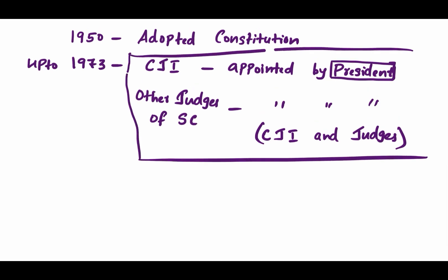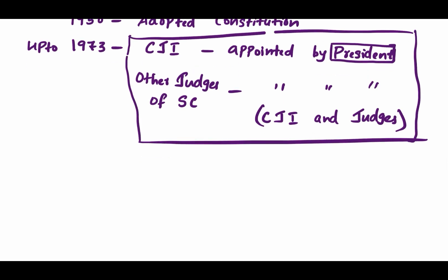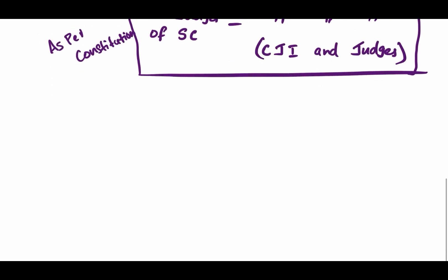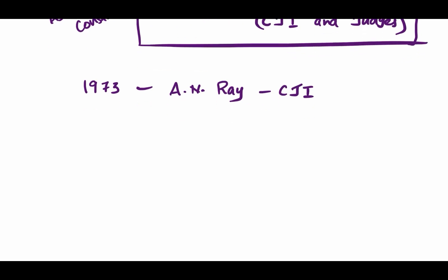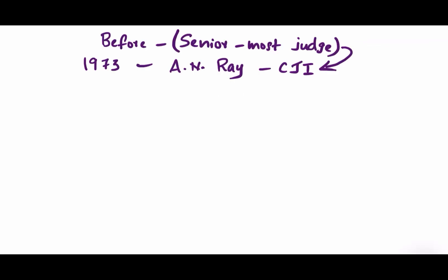There was a convention where the senior-most judge of the Supreme Court is appointed as the Chief Justice of India. But this was changed in 1973, when A.N. Ray was appointed as the Chief Justice against the convention. Again in 1977, another Chief Justice was appointed who superseded his seniors, and this led to a conflict between the government or the executive and the judiciary.